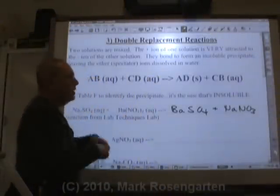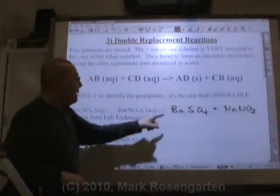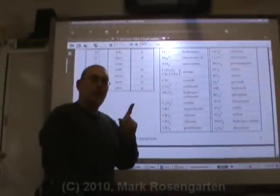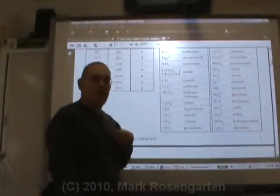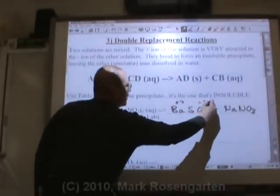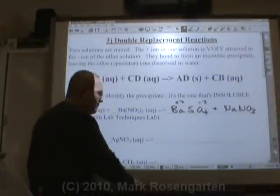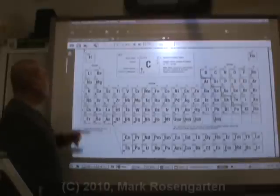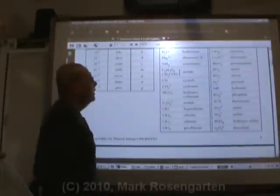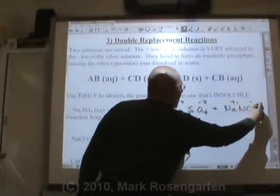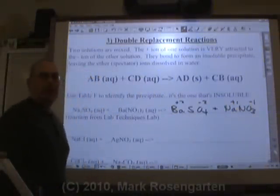Let's write some formulas by looking up some charges. Barium has a charge of plus 2, and sulfate has a charge of negative 2. So that's the properly written formula for barium sulfate. Sodium is plus 1, and nitrate is minus 1. So that's a properly written formula as well.